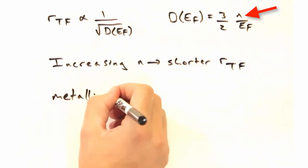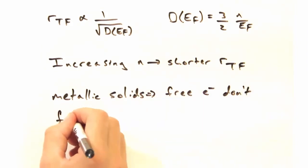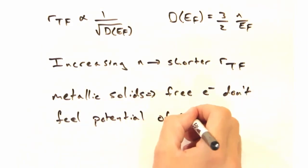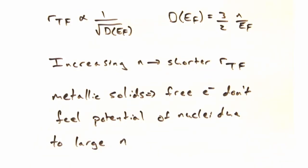Going back to metallic solids then, the reason why the free electron model works so well is because the electron rarely gets close enough to feel the atomic nuclei.